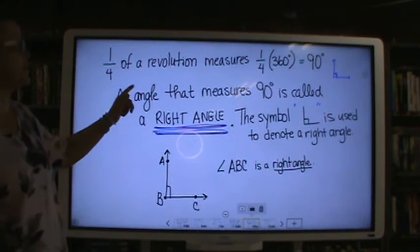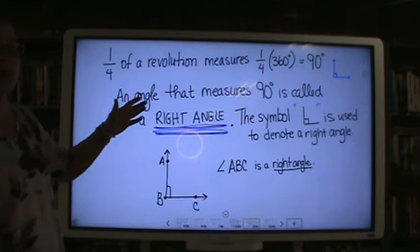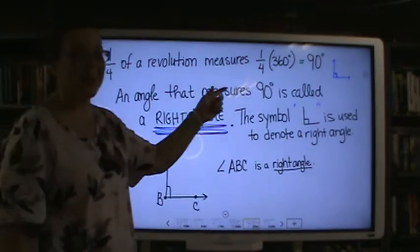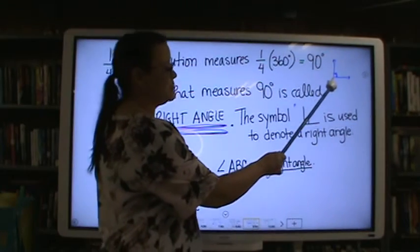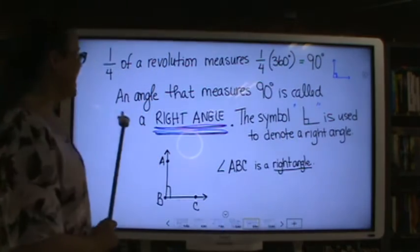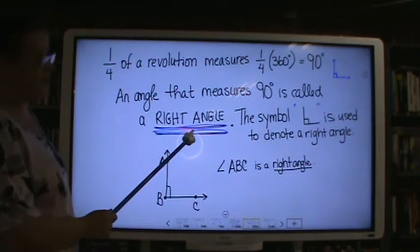A quarter of a revolution measures a quarter of 360 which is 90 degrees. That angle is represented here. An angle that measures 90 degrees is called a right angle.